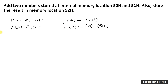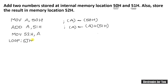This result should be stored at memory location 52h, so I am using the MOV instruction again: MOV 52h, A. The accumulator is the source on the right-hand side and 52h is the destination. That is the end of the program. The end is indicated by SJMP LOOP, which jumps to the program itself.